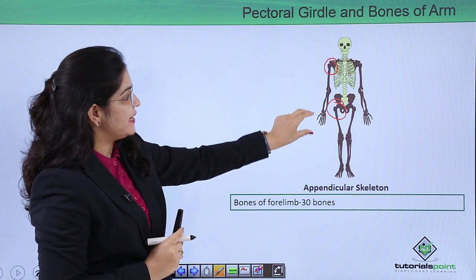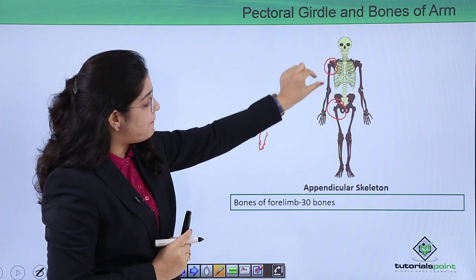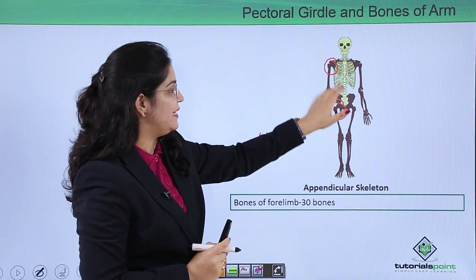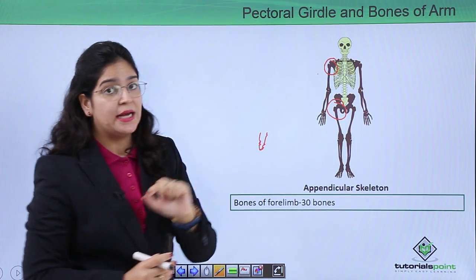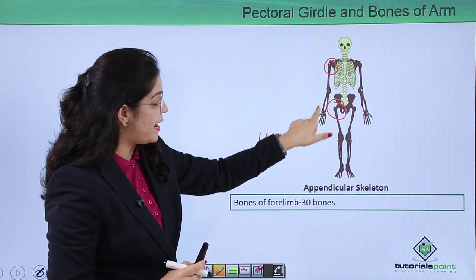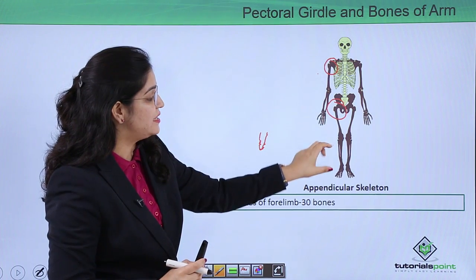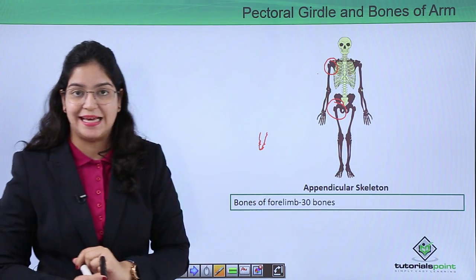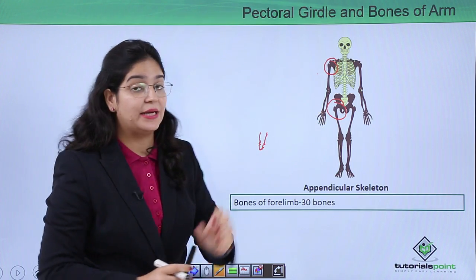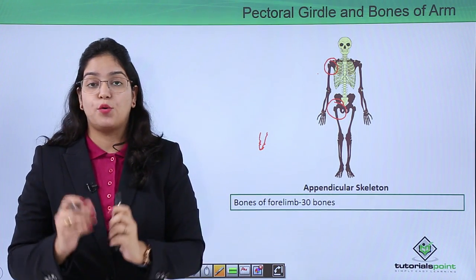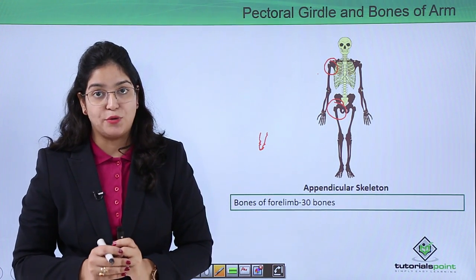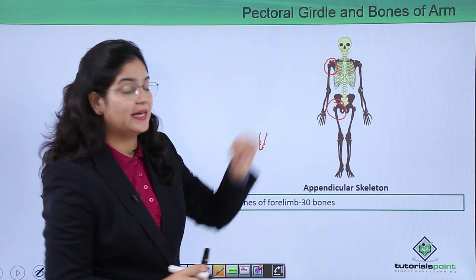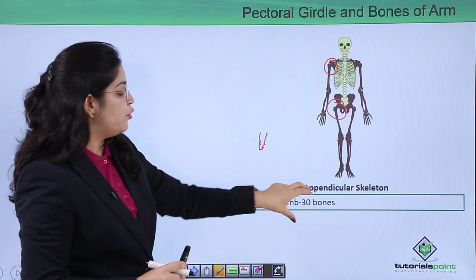The part which connects the upper limbs or arms to the axial skeleton is called the pectoral girdle, and the part which connects the lower limb to the axial skeleton is called the pelvic girdle. In this video we are going to learn about the pectoral girdle — the upper girdle.